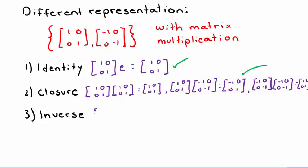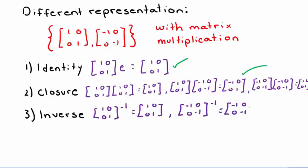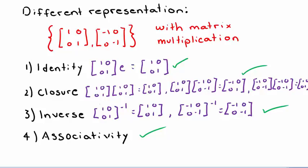For the inverse, the inverse of [[1,0],[0,1]] is itself, and the inverse of [[-1,0],[0,-1]] is itself. Both elements exist in the group, so the inverse holds. Matrix multiplication is associative, as we learned in linear algebra. So all four requirements hold, and these two 2x2 matrices with multiplication are indeed a group.